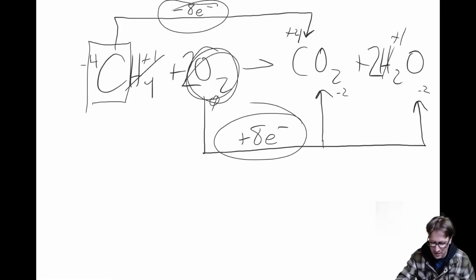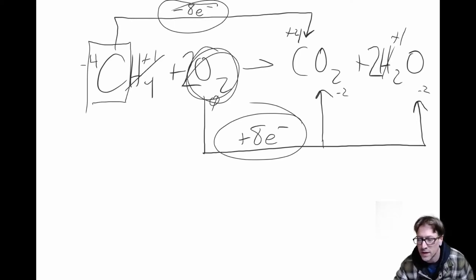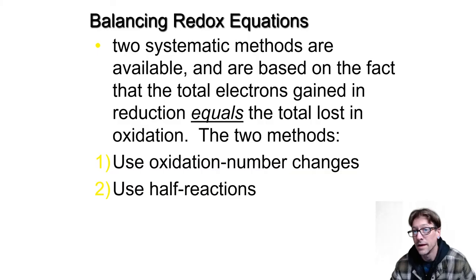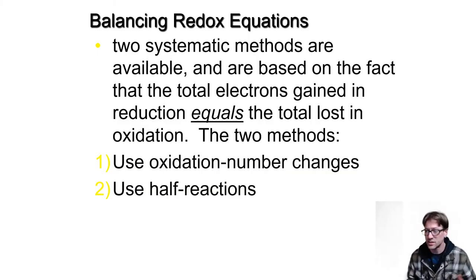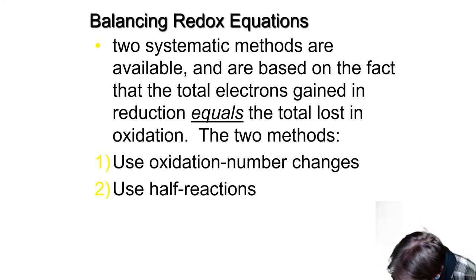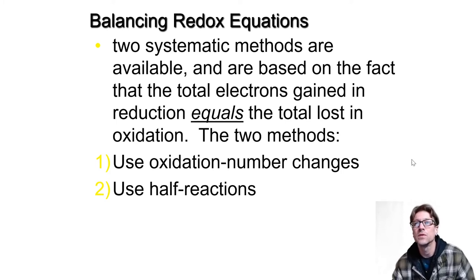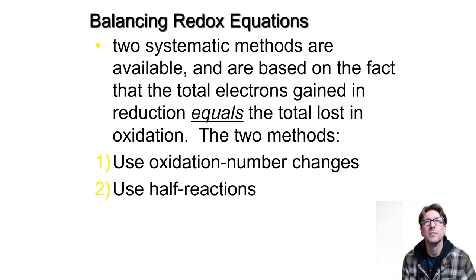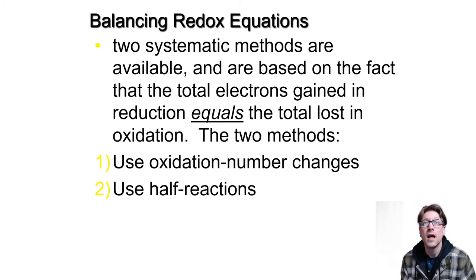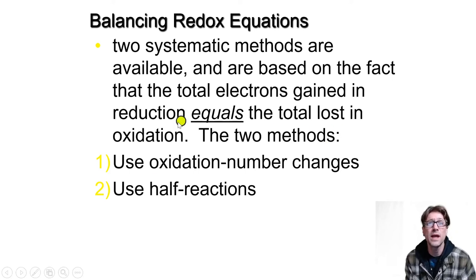So carbon was oxidized and oxygen was reduced. Now let's talk about balancing methods. There are two systematic methods we can use to balance redox reactions. We want the electrons to be equal as well as the matter. The first is the oxidation number change method — that's what I just did, tracking oxidation numbers of all chemical species in the overall reaction.